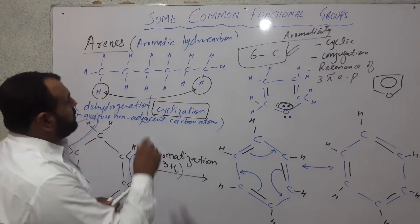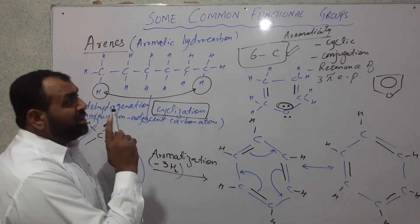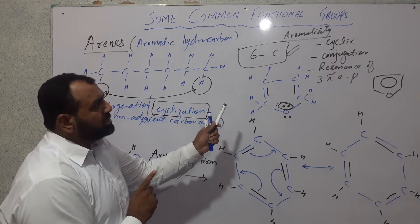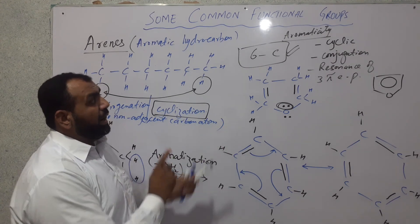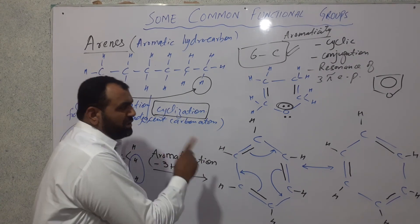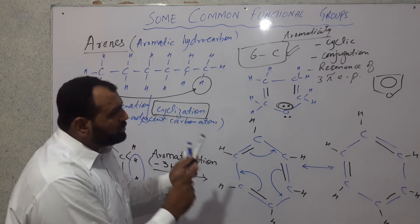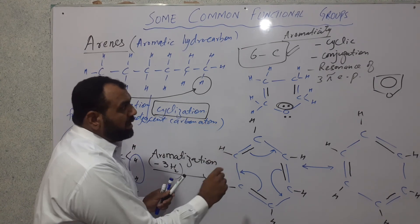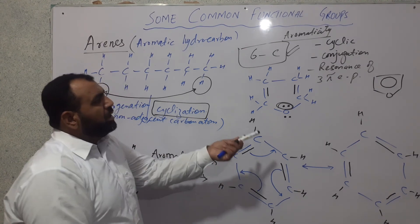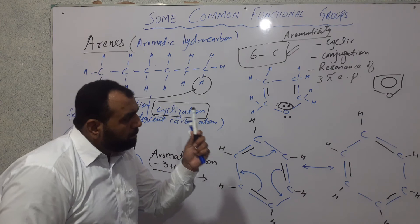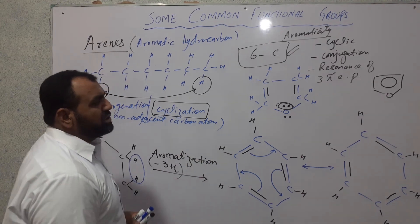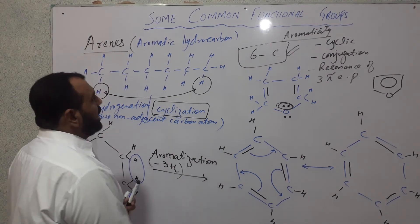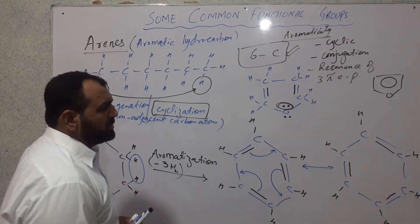Aromaticity starts with five-membered heterocyclic ring compounds, and in the case of homocyclic compounds, aromaticity starts from six carbon atoms. Benzene is the basic repeating and functional unit of aromatic hydrocarbons.